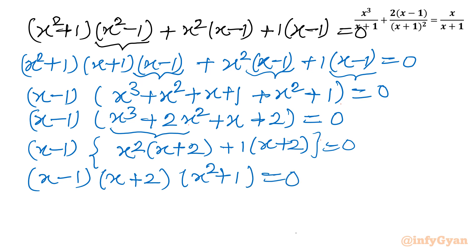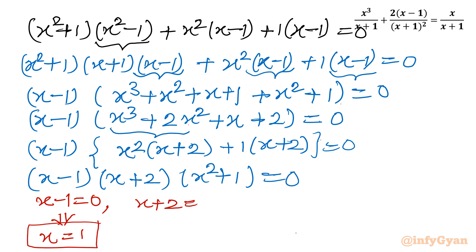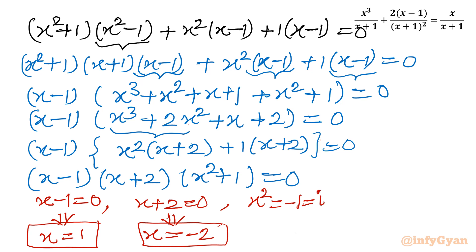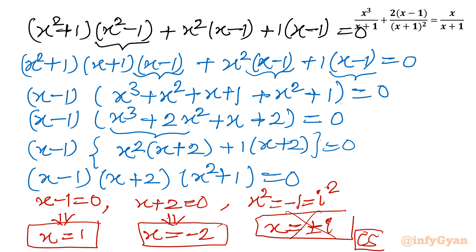Since f · g · h = 0, we set each factor to zero. From (x − 1) = 0 we get x = 1, a real solution. From (x + 2) = 0 we get x = −2, also a real solution. From (x² + 1) = 0 we get x = ±i, which we reject as complex. So only two real solutions are x = 1 and x = −2.